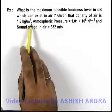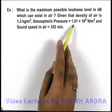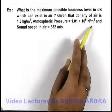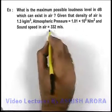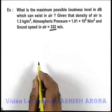We are given that the density of air is 1.3 kg per meter cube and atmospheric pressure is 1.01 into 10 to power 5 pascal, and sound speed is also given as 332 meters per second.